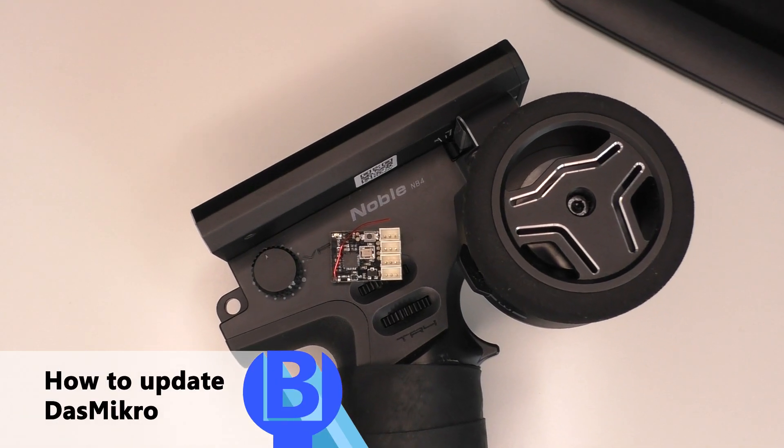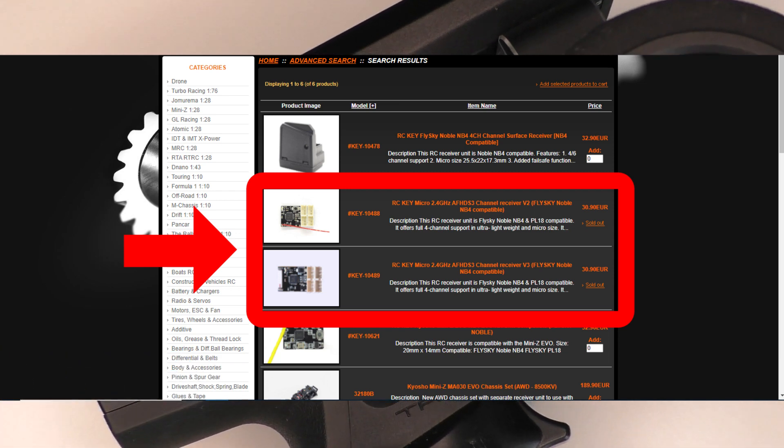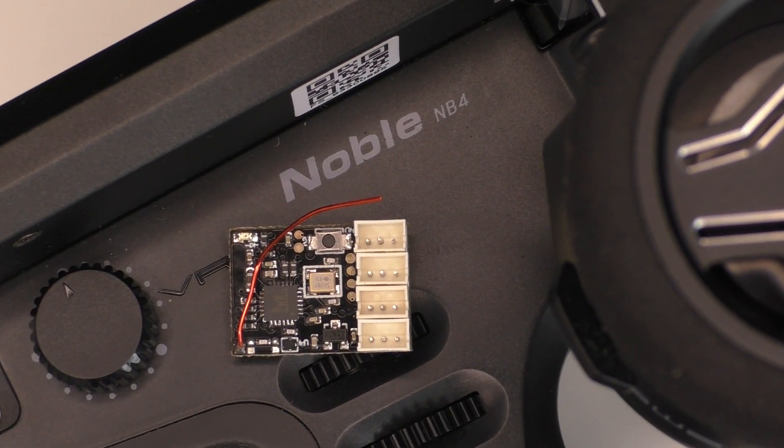This is the method to update a third-party receiver. There are many brands, not just Dash Micro. Basically, if it is a micro receiver that's not from FlashGuy, this is how you update it.